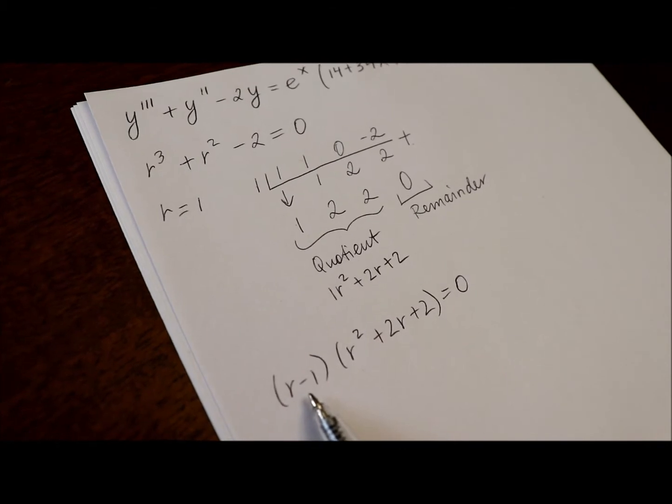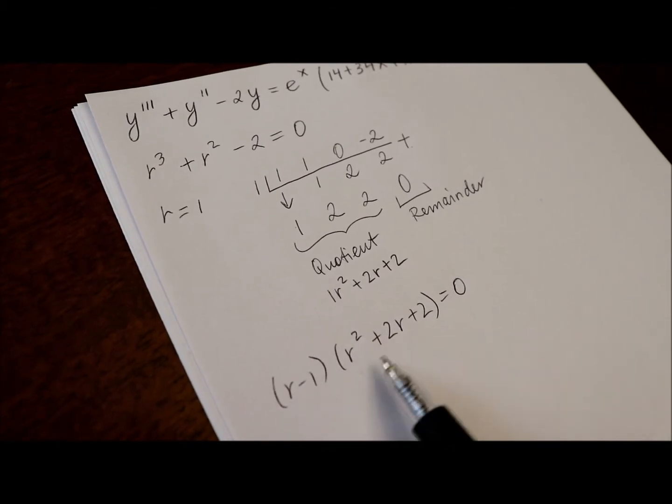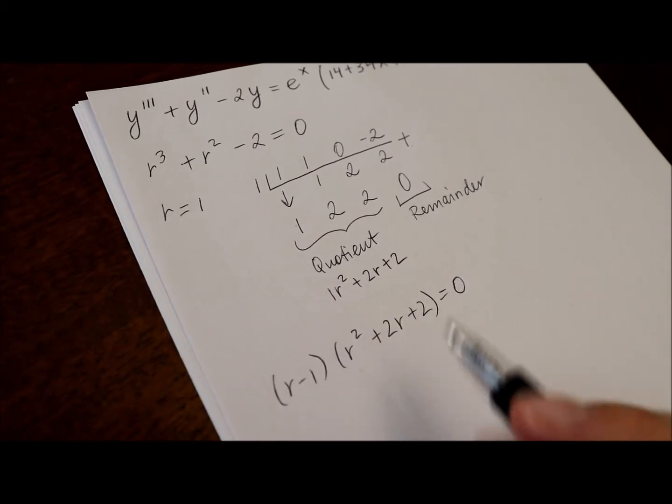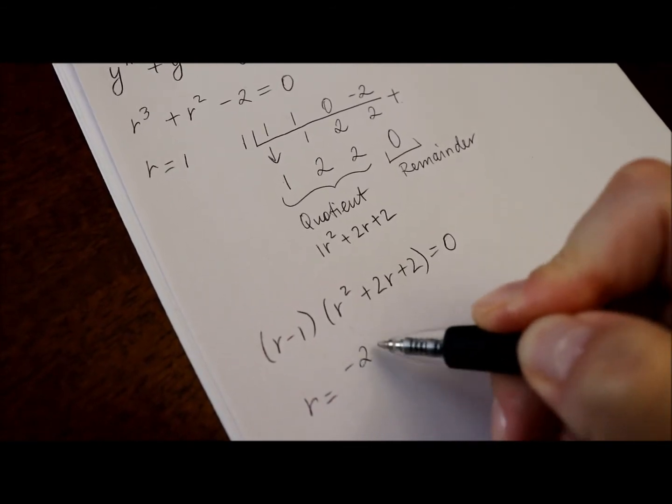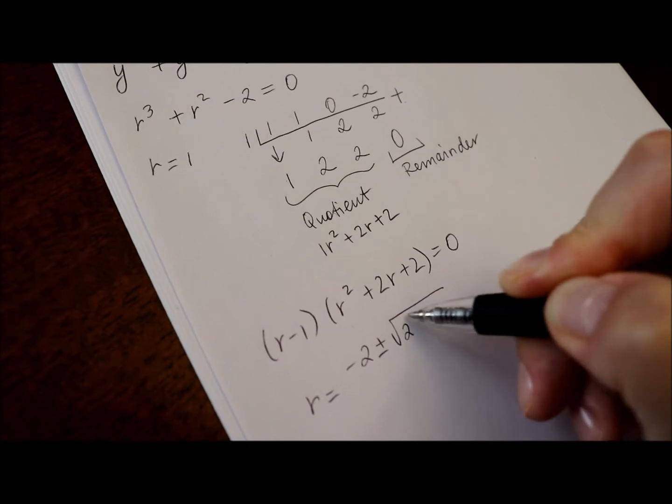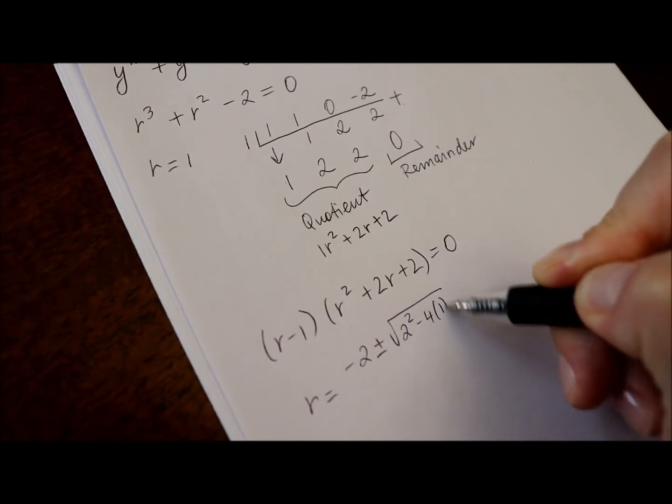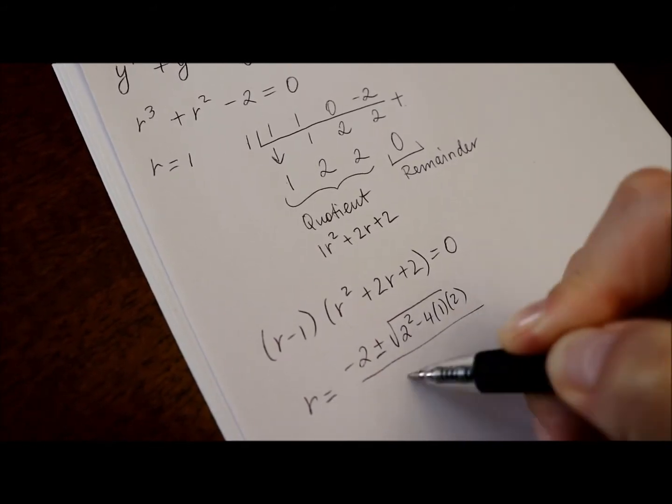We already found the first solution, r equals 1, so let's find the solutions of this factor. I will use the quadratic formula. r equals negative 2 plus or minus square root of 2 squared minus 4 times 1 times 2 divided by 2 times 1.